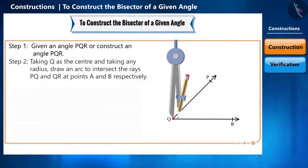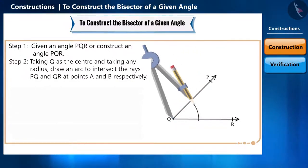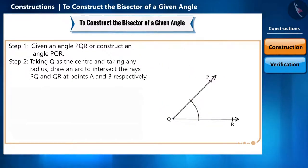Place the pointed end of the compass at the vertex Q. Taking Q as the center and taking any radius, draw an arc to intersect the rays PQ and QR at points A and B respectively.